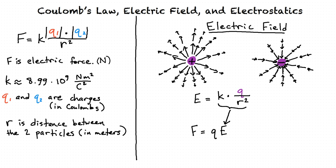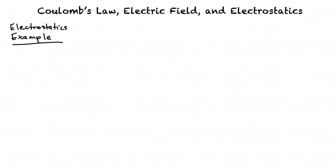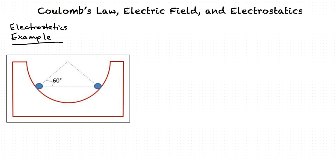Let's now do an example of electrostatics. With electrostatics, we analyze objects in static equilibrium in which electric forces are used. In this problem, there are common forces like gravity as well as electric forces. Two identical positive charges both have mass M equals 1.0×10⁻⁶ kg, and are at rest on the surface of a hemispherical bowl of radius R equals 0.25 meters. Three forces act on each particle: the normal force, the weight force, and the repulsive force they exert on each other.